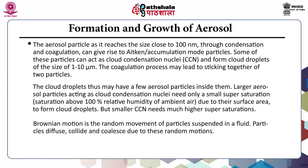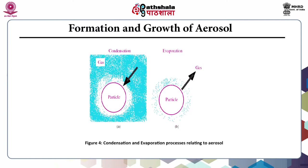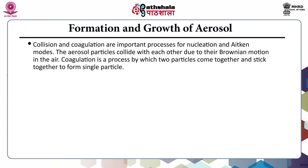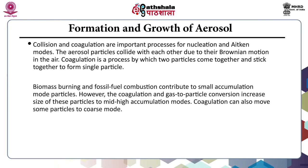Brownian motion is the random movement of particles suspended in a fluid; particles diffuse, collide, and coalesce through this random motion. Collision and coagulation are important processes for nucleation and Aitken modes. Coagulation is the process by which two particles come together and form a single particle. Biomass burning and fossil fuel combustion contribute to small accumulation mode particles; however, coagulation and gas-to-particle conversion increase their size to mid-to-high accumulation mode. Coagulation can also move some particles to coarse mode.